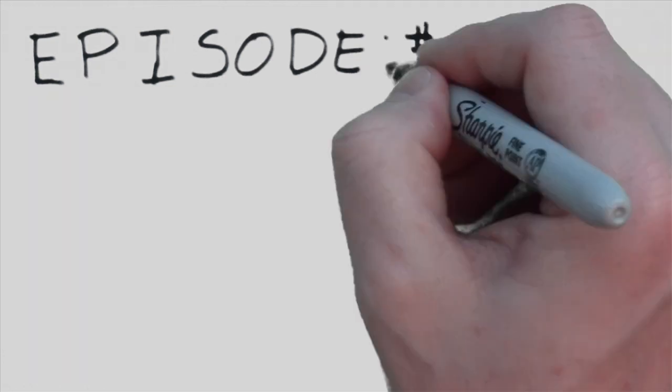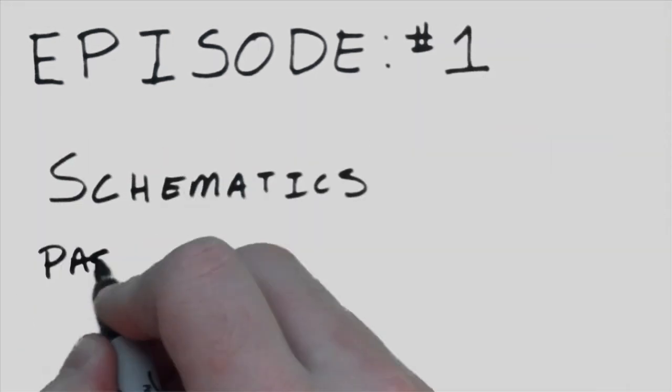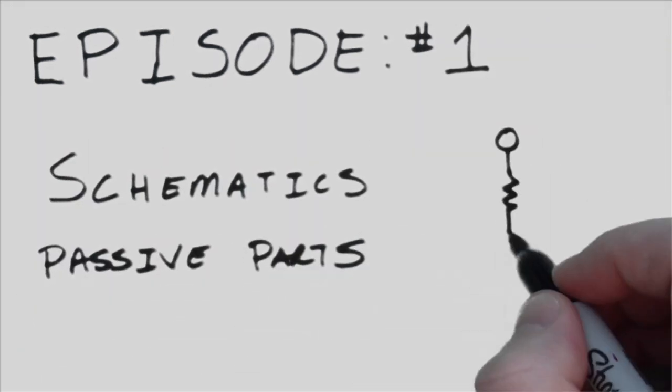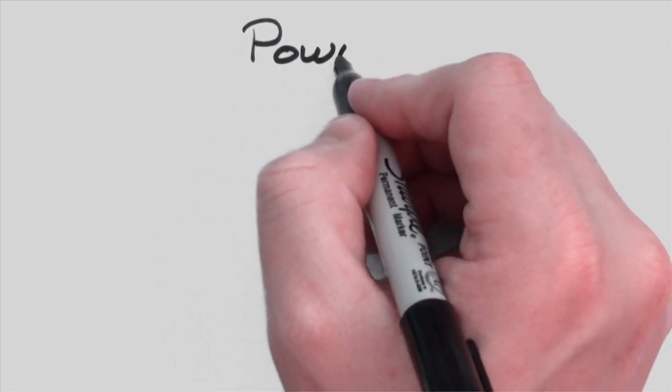This episode of the Atoms Podcast is titled Schematic Symbols for Passive Components. Every circuit has to have some kind of power, so why don't we start there?